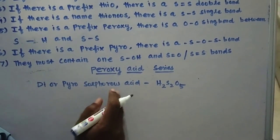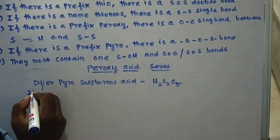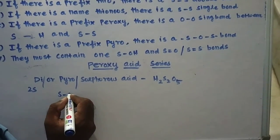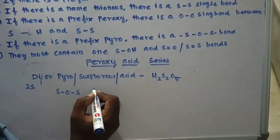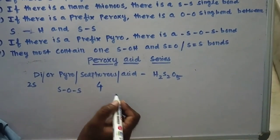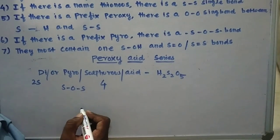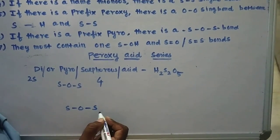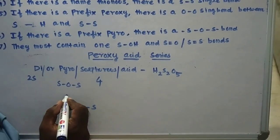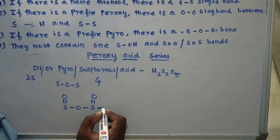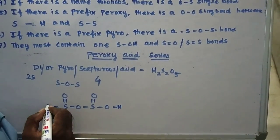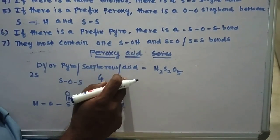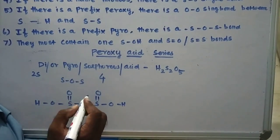Now, an exception: di- or pyrosulfurous acid. Di means two sulfur atoms; pyro means there is an S–O–S arrangement; sulfurous means the valency of sulfur is 4. From the tricks, the expected structure would have S=O, S–O–S, and OH groups. However, this is not the correct structure.